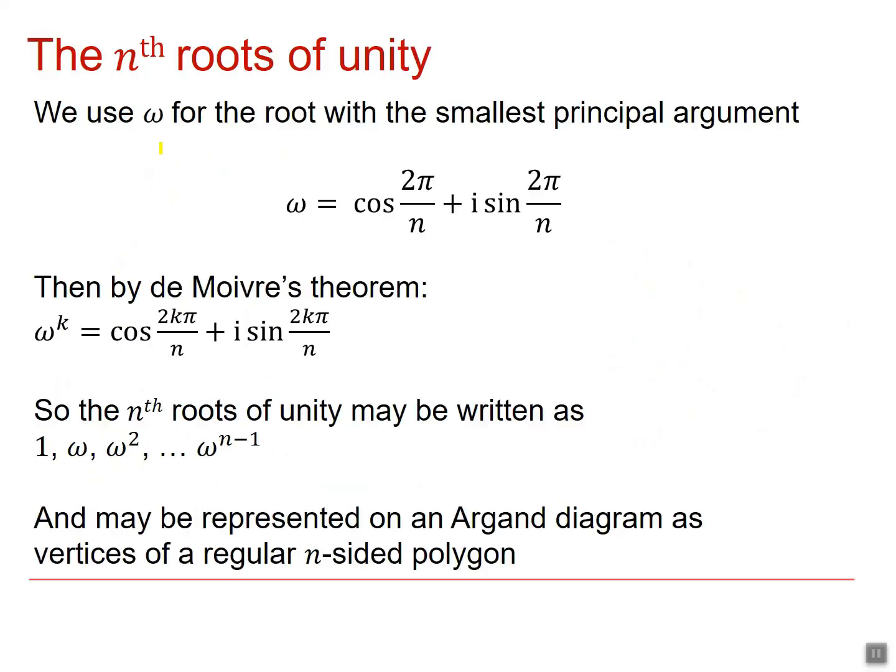We use the letter omega for the root with the smallest principal argument. So it would be this one. So by De Moivre's theorem, we get that omega to the k is going to be cos of 2k pi by n plus i sin 2k pi by n.